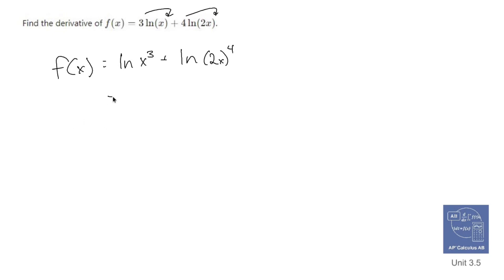Which cleaning that up a little bit more would be ln of x to the third plus ln of, what is that, 16x to the fourth. Now these guys, I haven't done anything. They haven't been added yet. When you add two logs or add two natural logs, you multiply the inside.